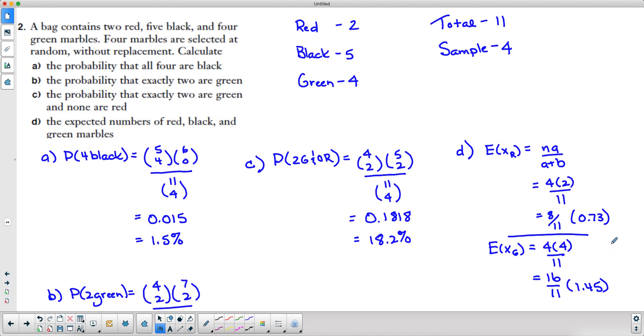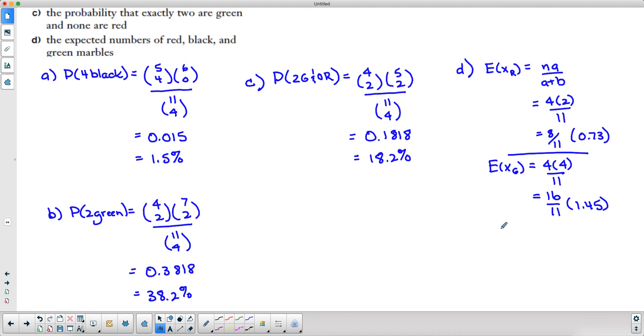And the very last thing we're going to do is the expected value of the black marbles. The sample size is still 4, this time our black marbles are 5, and the entire population is still 11. So this is going to be 20 over 11 or 1.82. Now if you add up all of these things you should get the total sample size, so add them up and you're going to get 4, or approximately 4. If you added up the fractions you would get exactly 4. 8 plus 16 plus 20 is 44 over 11 is exactly 4. I hope that helps.